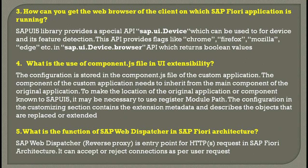The fourth question is: what is the use of the component.js file in extensibility? In UI extensibility, the technical configuration of any application is stored in the component.js file. The component of the custom application needs to be inherited from the main component of the original application. It may be necessary to register the module path so SAPUI5 knows the location. The configuration in the customizing section contains extension metadata describing which objects can be replaced or extended.